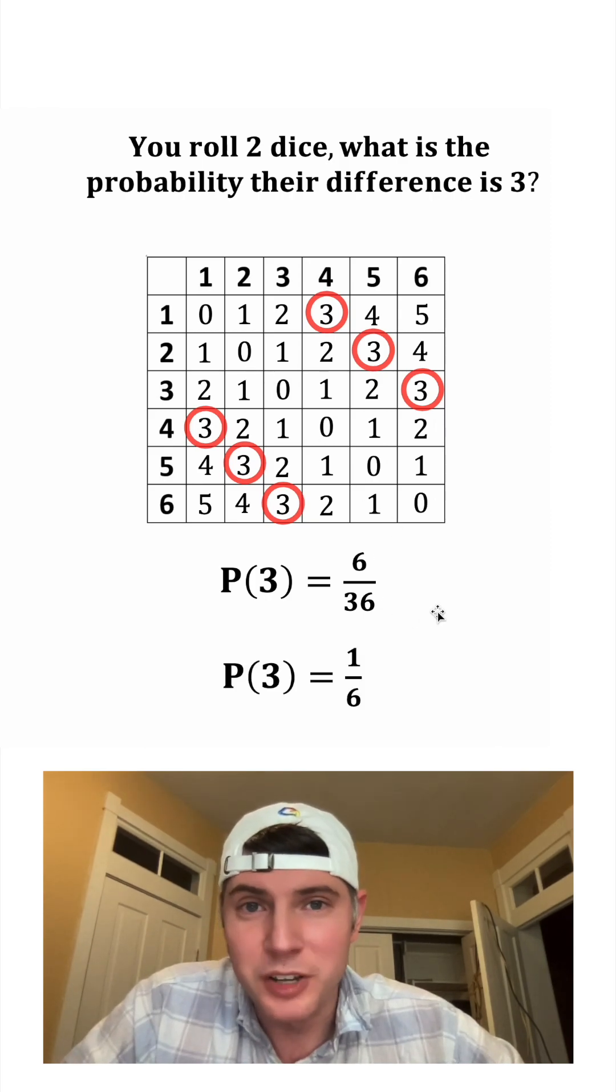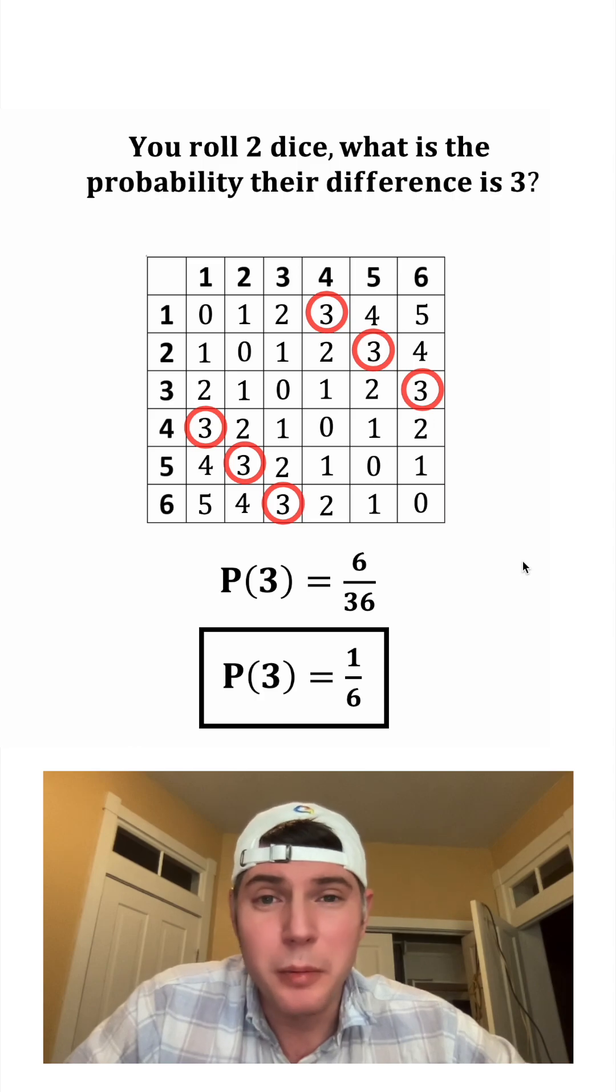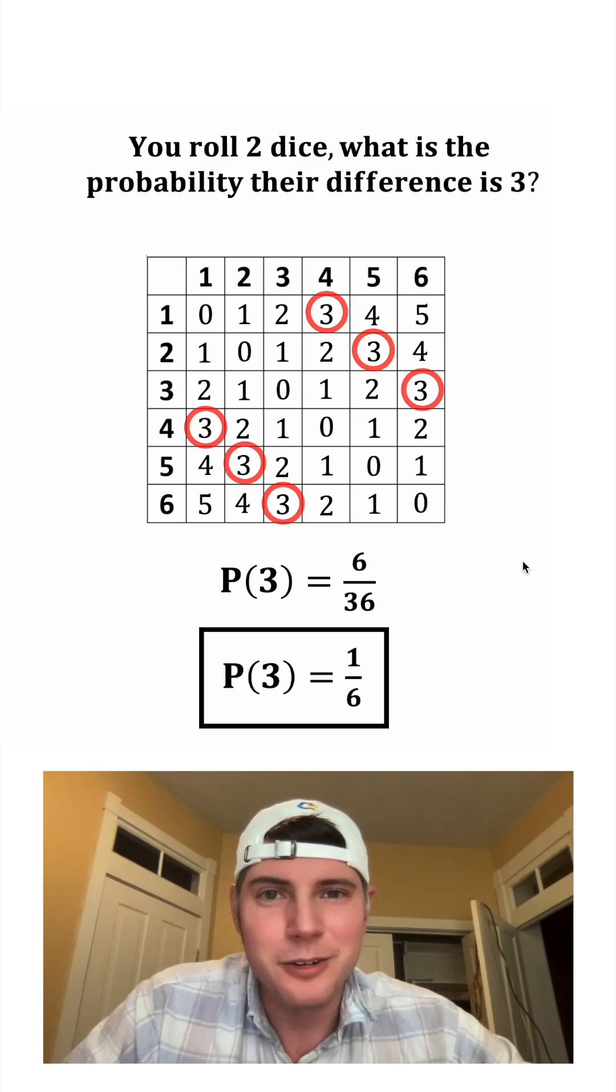If you roll two dice, the probability that their difference is three is one sixth. How exciting!